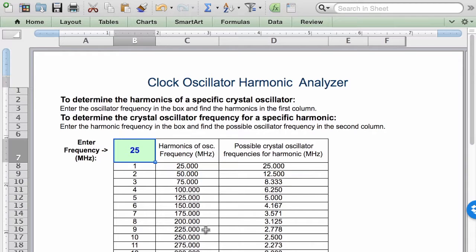This is very helpful for determining if that 275 megahertz harmonic is related to some crystal oscillator frequency.